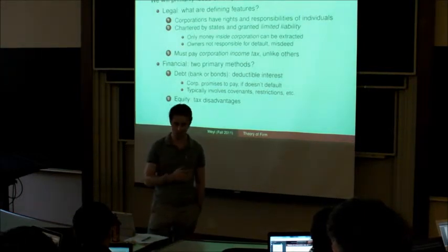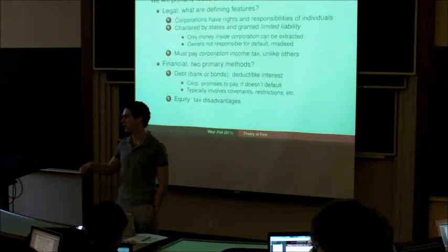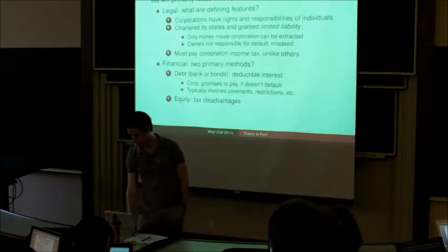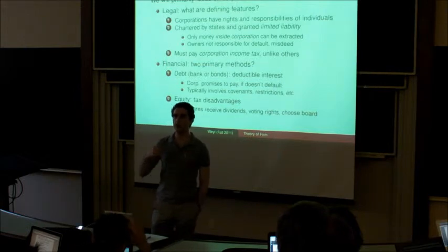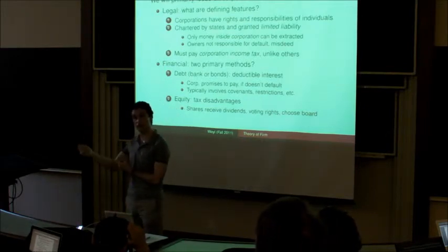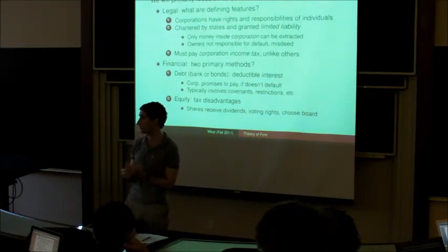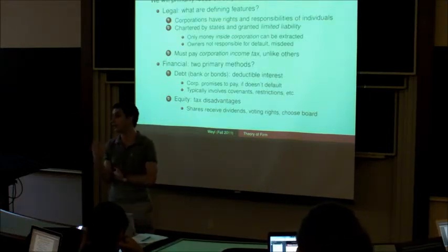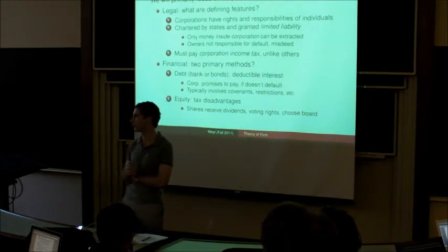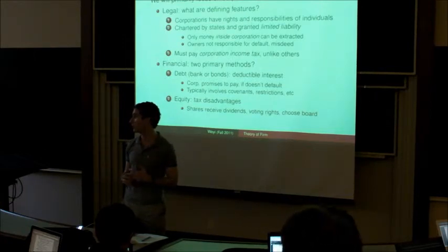The second form, which Cody pointed out, is equity or stocks, which has the tax disadvantage that you can't deduct from your income any profits that you pay out to the stockholders, unlike the interest you pay to bondholders. The way stock works is you get money from someone in exchange for shares in the company. A share means you're entitled to the dividends of the company, that is, any profits it pays out in the future. You're entitled to voting rights in the company. I'll talk more about the things you vote on, but basically it's stuff like who gets elected to the corporate board and whether the company merges with another company. You choose the board of directors by that voting, and the board of directors are a group of people who have the responsibility of looking out for the interests of the people who own the shares of the company.